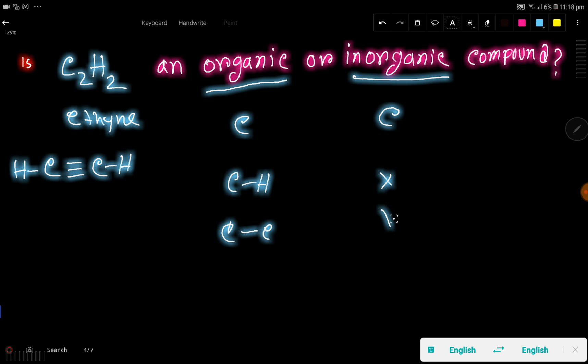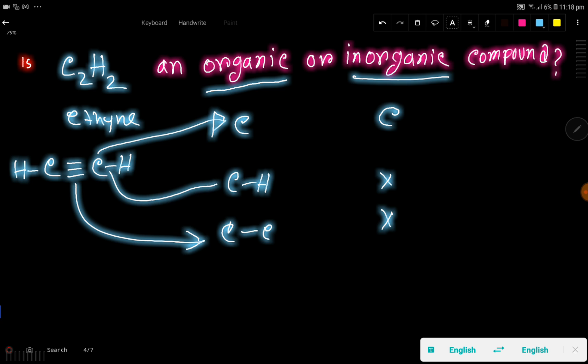Now check for C2H2, that is ethyne. Here we are getting carbon-carbon bonds and carbon-hydrogen bonds. So we can say that C2H2, that is ethyne, is an organic compound.